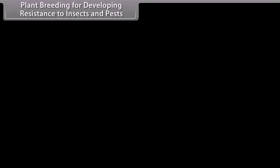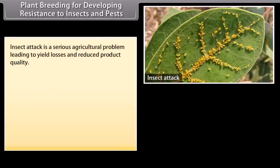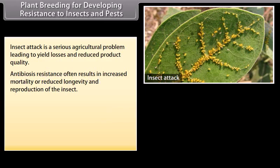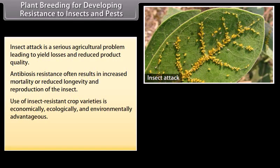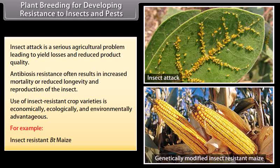Plant breeding for developing resistance to insects and pests: Insect attack is a serious agricultural problem leading to yield losses and reduced product quality. Antibiosis resistance often results in increased mortality or reduced longevity and reproduction of the insect. Use of insect-resistant crop varieties is economically, ecologically, and environmentally advantageous. For example, insect-resistant Bt maize.